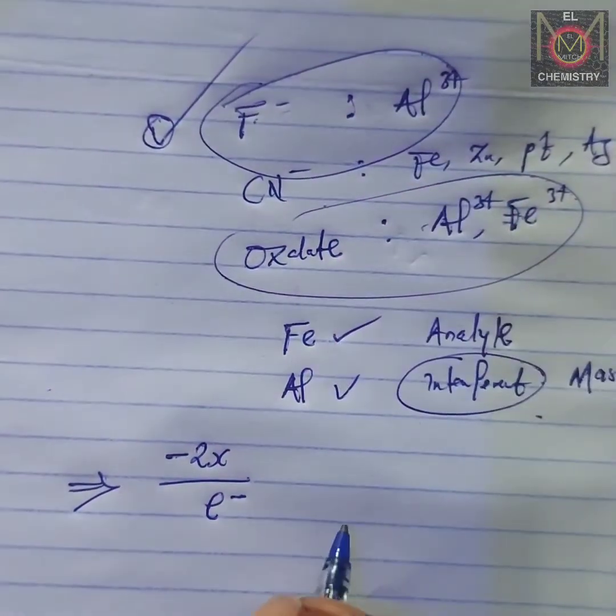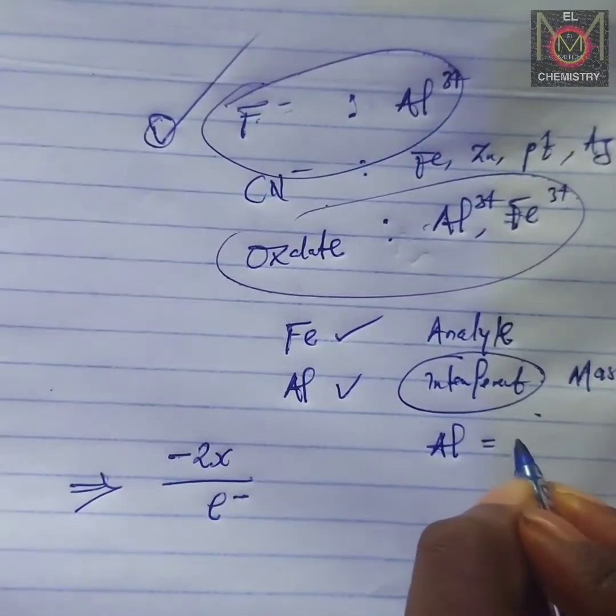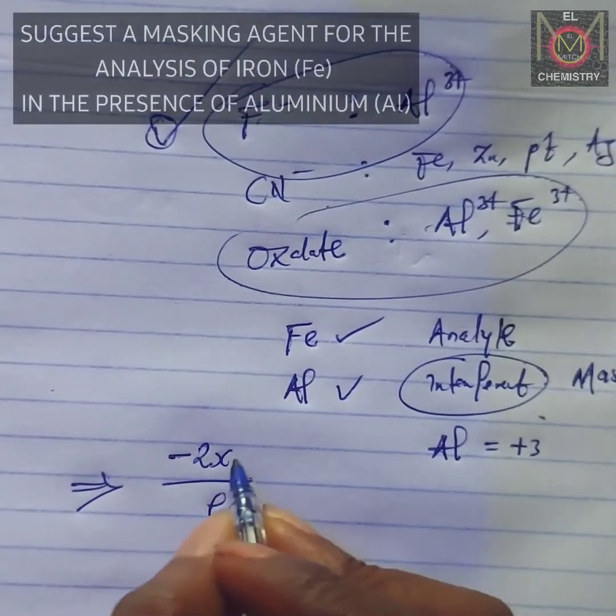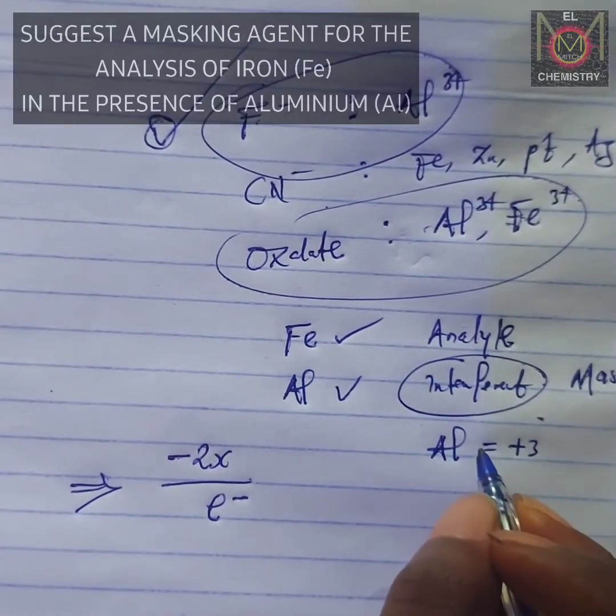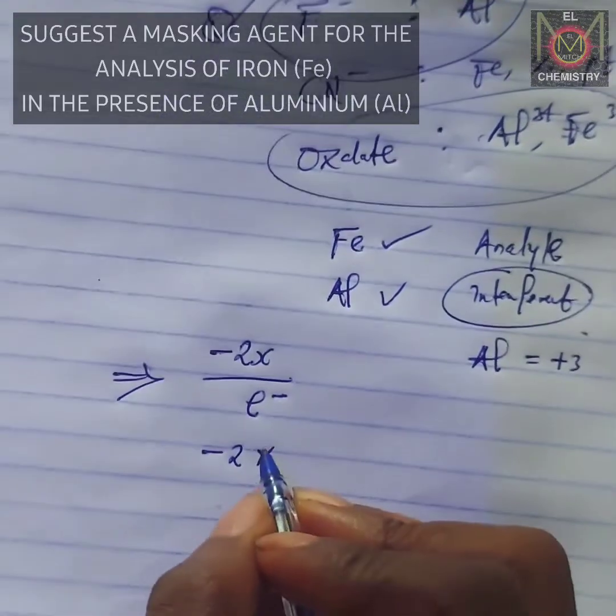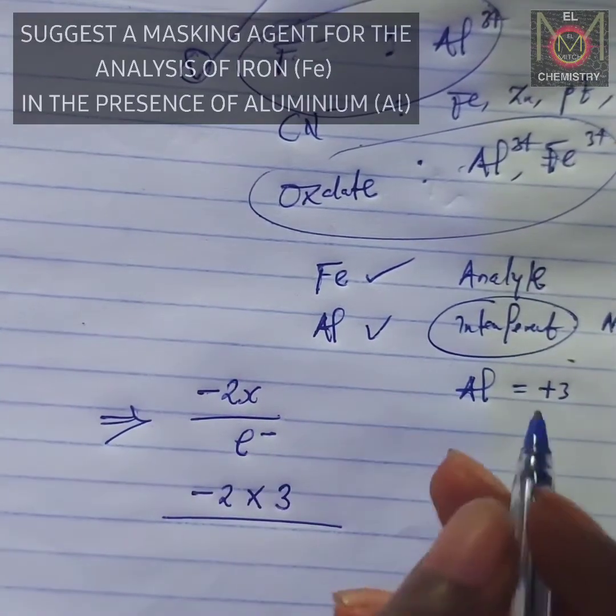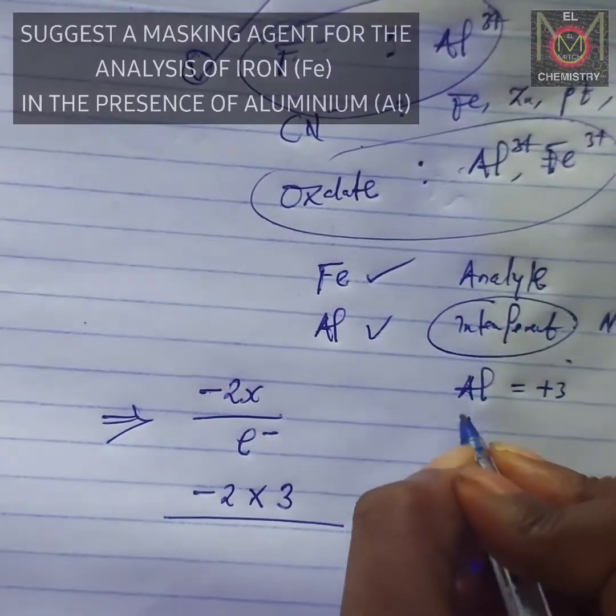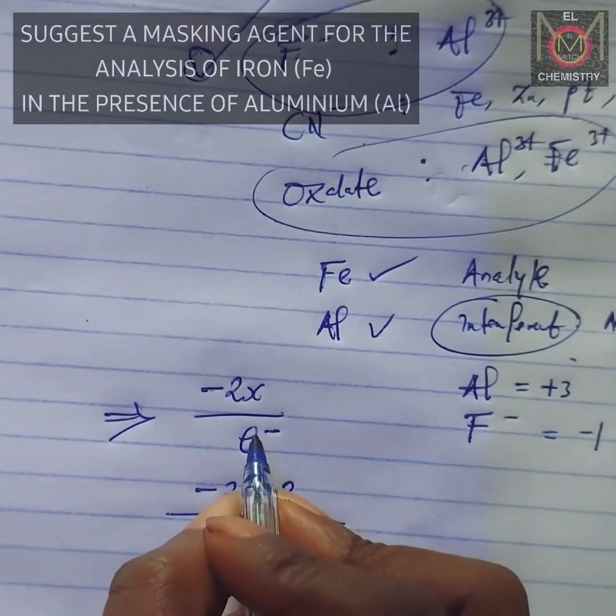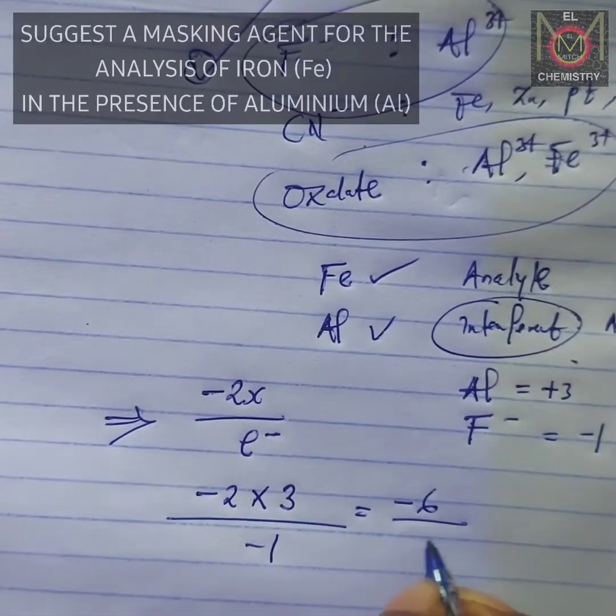In this case, aluminum has charge +3. I have x standing for the charge on the interference, so minus 2 multiplied by 3 divided by the charge. The charge is related to the masking agent. We have fluoride ion, which has charge minus 1. So definitely my charge here, that of the interference, is minus 1. So I have minus 6 over minus 1, which gives 6.